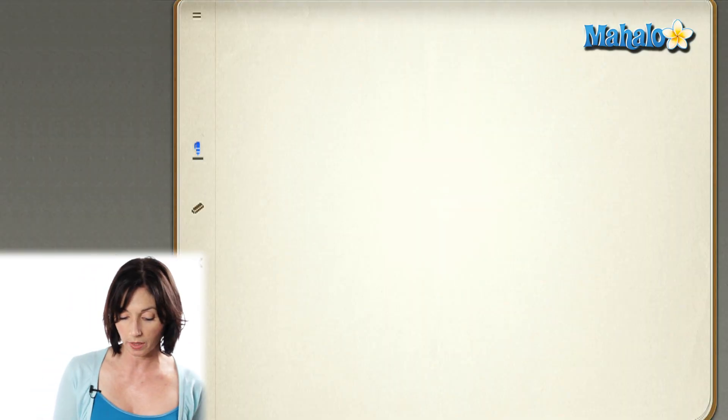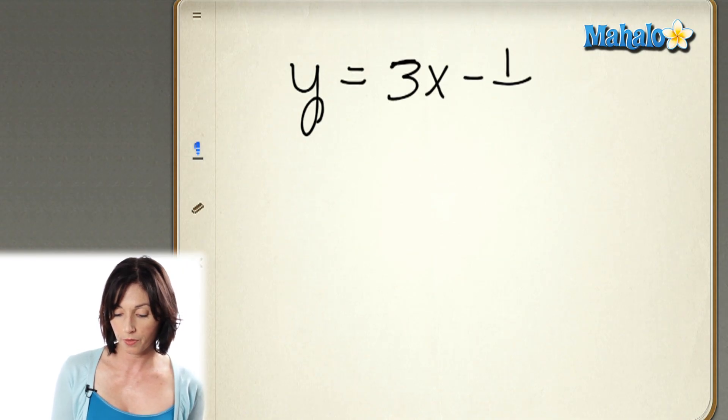Now, suppose you're given a slope. Let's say we have a line y equals 3x minus 1/2. And you're asked to find the slope of a line that's perpendicular to this line. It's actually pretty simple.